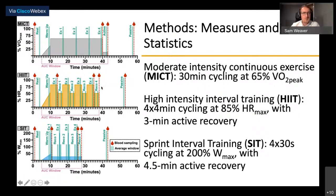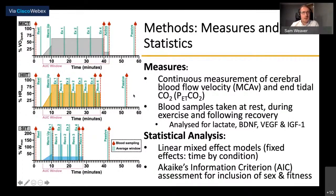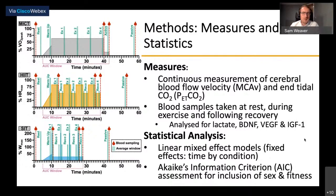Nine female and 15 male participants completed three exercise protocols in randomized order: moderate intensity continuous exercise (MICE) — 30 minutes cycling at 65% of VO2 max; a HIT protocol based on clinical guidelines of 4×4-minute efforts at 85% of heart rate max with 3-minute active recovery; and four 30-second sprint intervals at 200% of watt max with 4.5 minutes recovery. Each protocol's final bout was followed by 3 minutes of active recovery at 50 watts and 15 minutes of seated passive recovery. Continuous MCAv was collected using transcranial Doppler ultrasound alongside end-tidal CO2, and blood samples were analyzed for lactate and neurotrophic factors — BDNF, VEGF, and IGF-1. Linear mixed effects models were used, with time and condition as fixed effects.